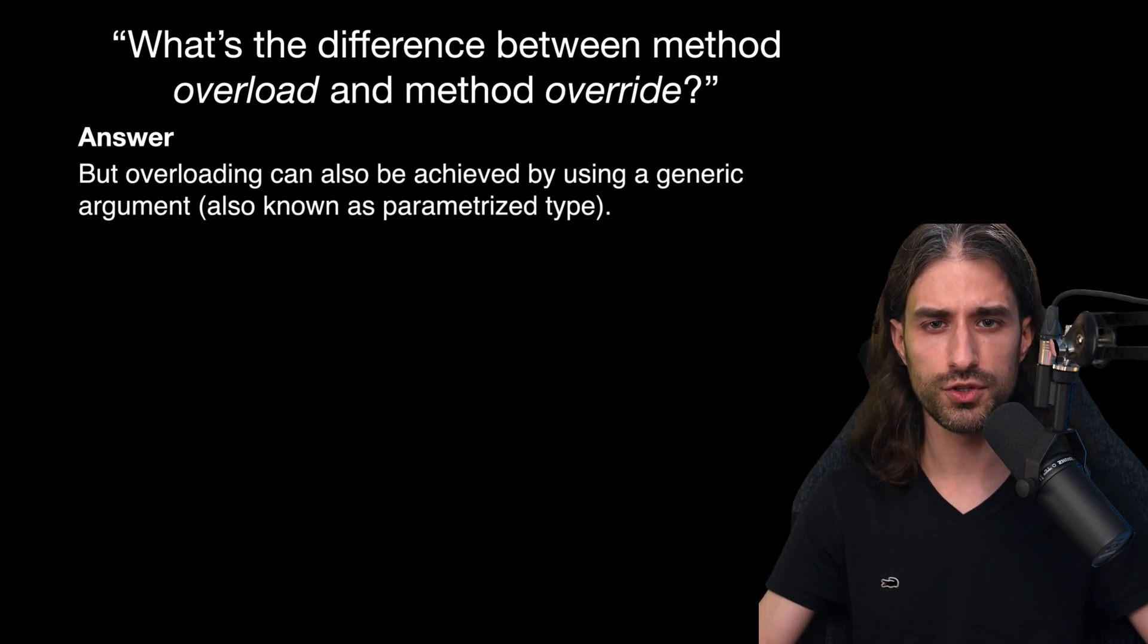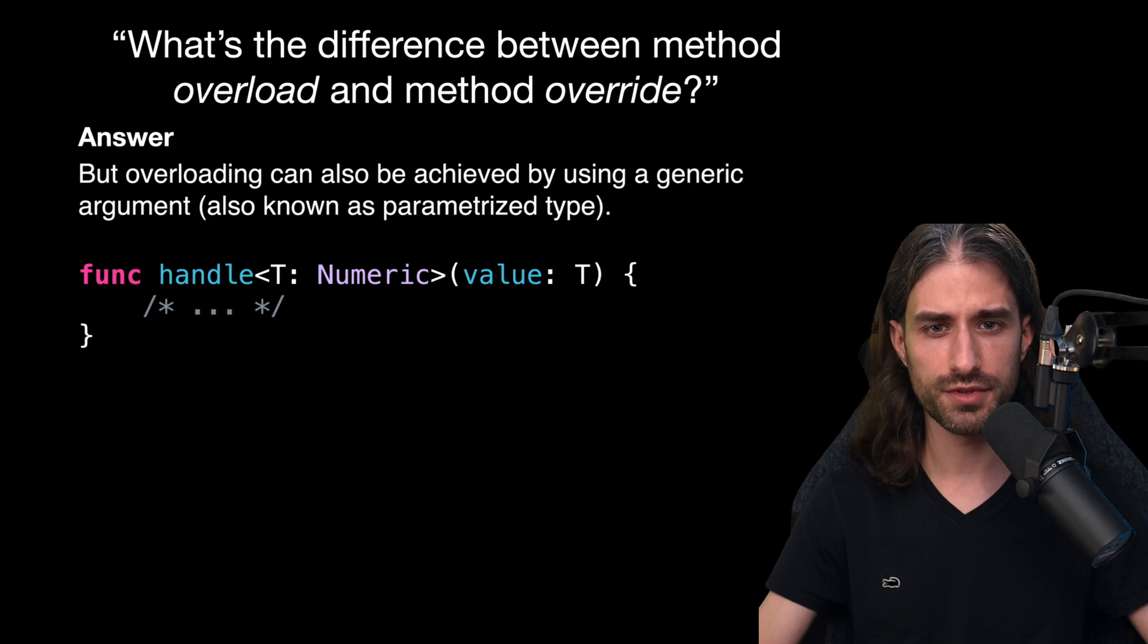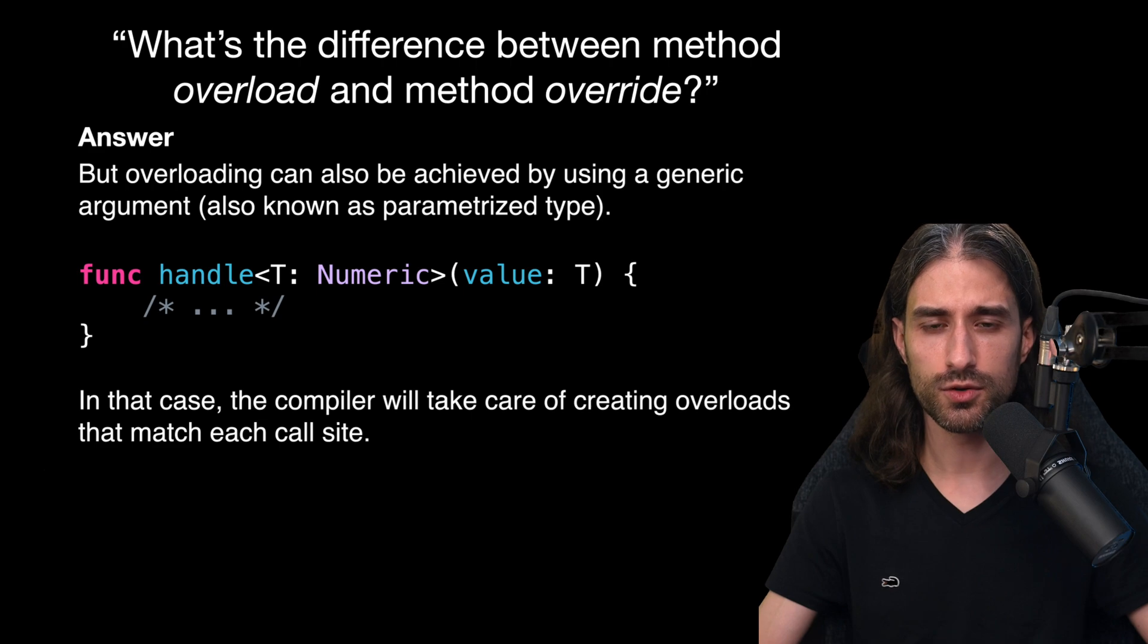But this is not the only way to implement overloading in Swift, because overloading can also be achieved through generic arguments, also sometimes referred to as parametrized types. Here is an example of such an overload that relies on a generic argument. In that instance, the compiler will take care of creating overloads that will match the actual type we use at the call site.